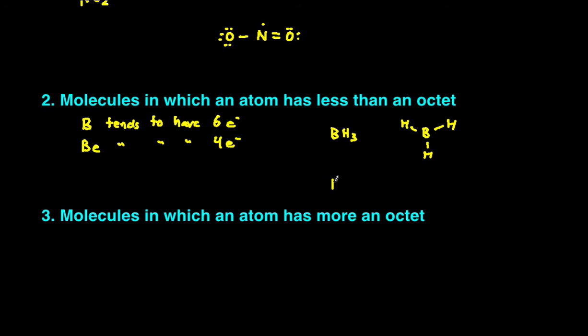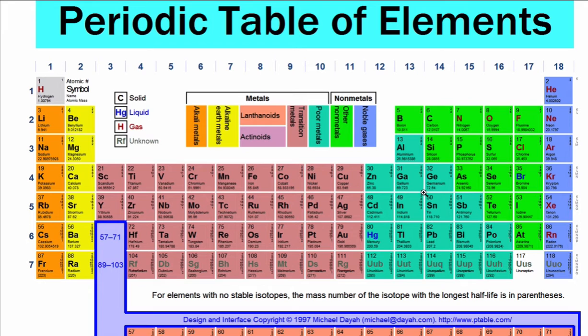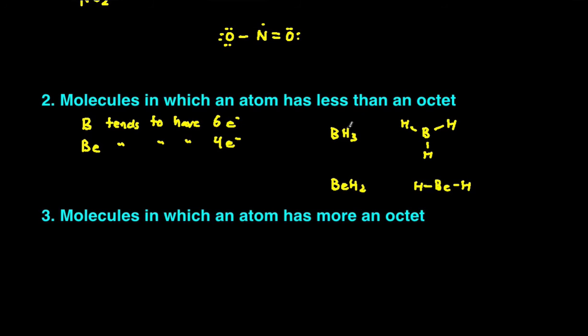And an example containing beryllium is BeH2. And the structure for that looks like this. And you can see beryllium only has four electrons around it. Actually, the entire group that boron's in tends to only have six electrons around it instead of eight.